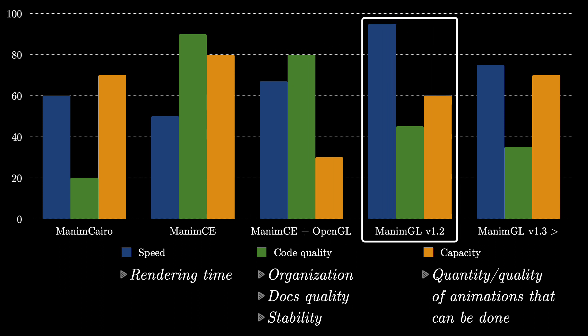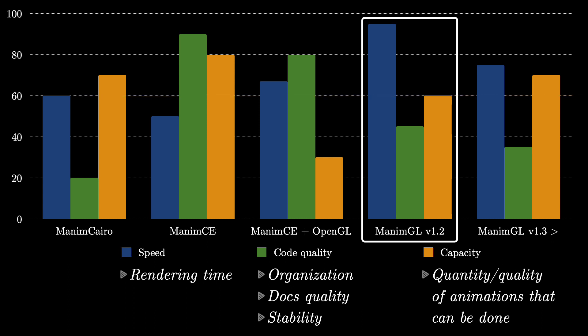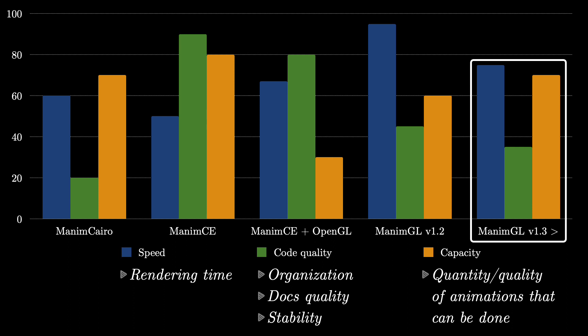In the case of Manim GL, we can distinguish two versions. Version 1.2 is the fastest of all versions so far — it can be several times faster than versions using Cairo. The amount of features, although not as many as Manim CE, are quite decent. The problem is that it is less stable and the documentation is very basic. Versions higher than 1.3 are less fast but have more features than version 1.2, plus the ability to make interactive animations. The documentation and code stability is worse than version 1.2, as Grant prioritizes code functionality — at the end of the day, this is the tool he created for himself.